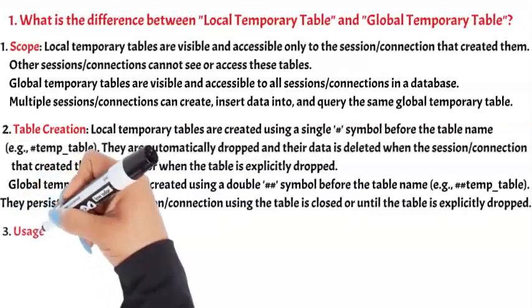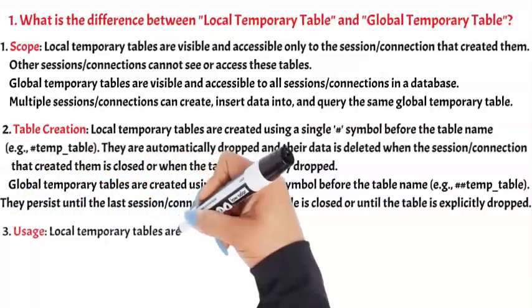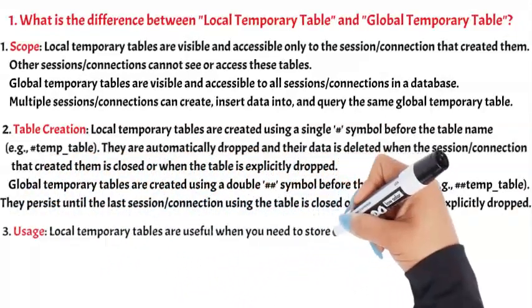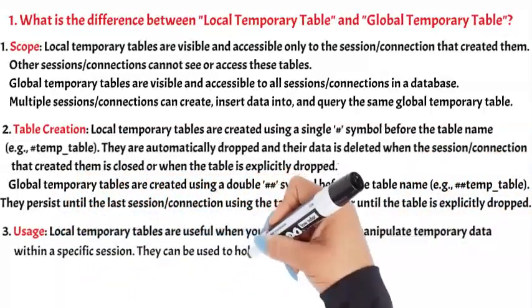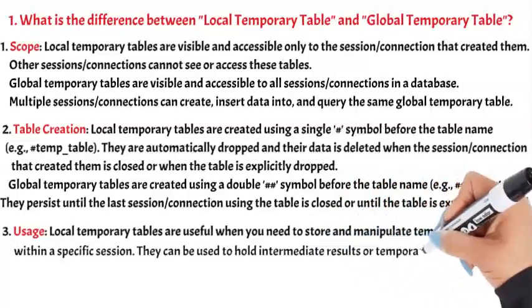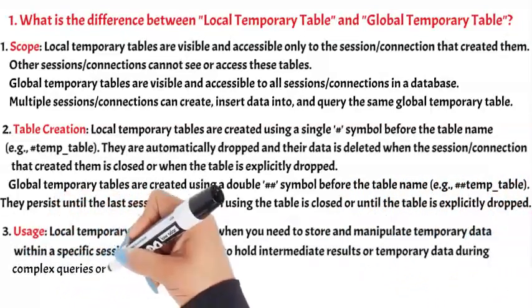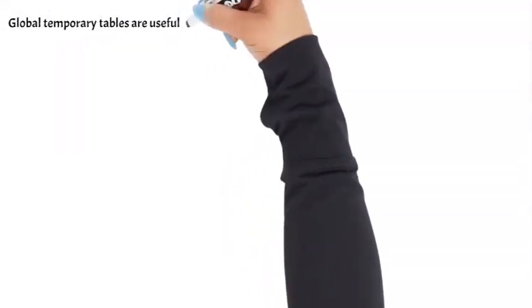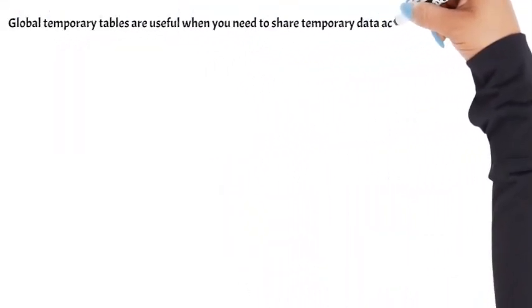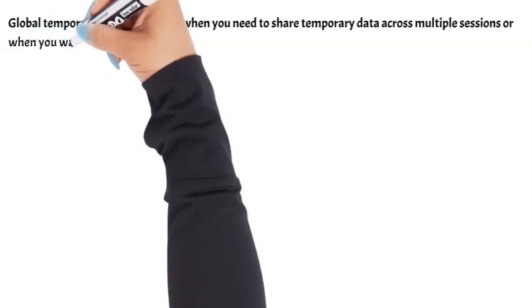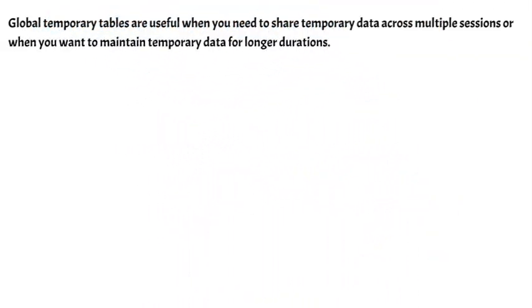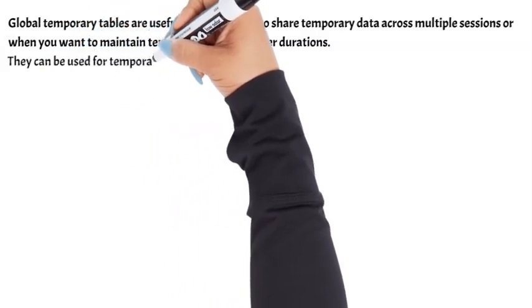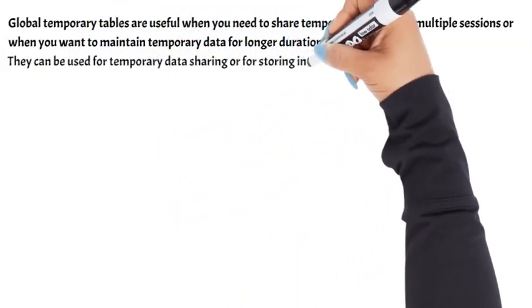3. Usage. Local temporary tables are useful when you need to store and manipulate temporary data within a specific session. They can be used to hold intermediate results or temporary data during complex queries or stored procedures. Global temporary tables are useful when you need to share temporary data across multiple sessions or when you want to maintain temporary data for longer durations. They can be used for temporary data sharing or for storing intermediate results.